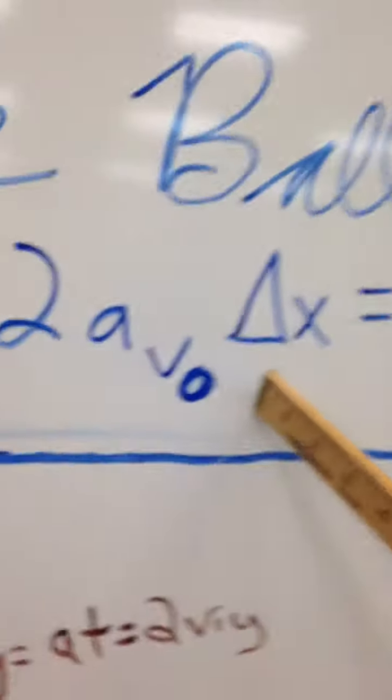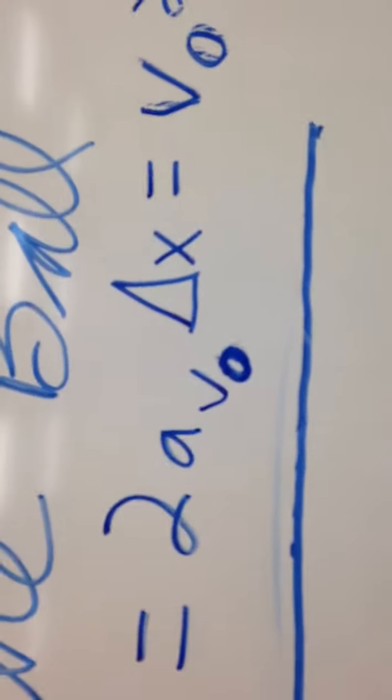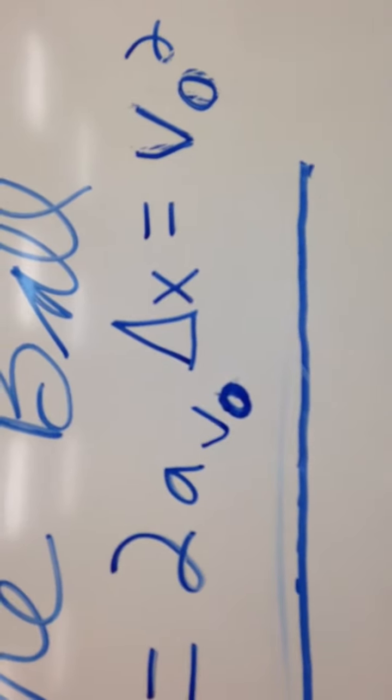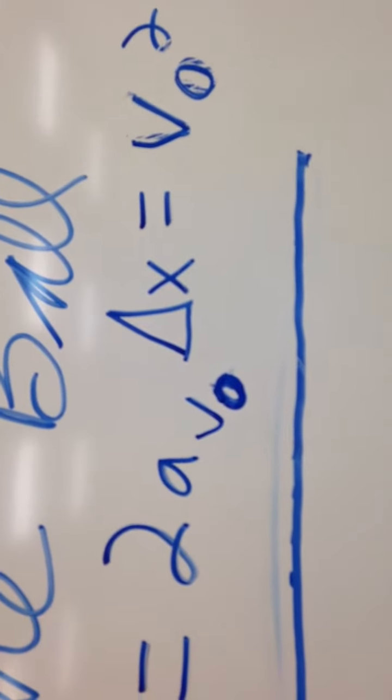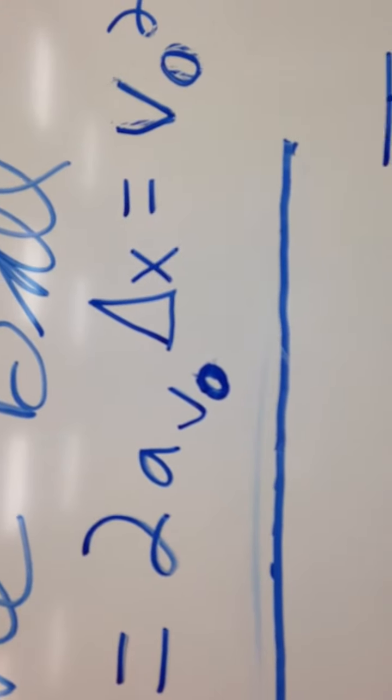We try to figure out the acceleration by using this equation: acceleration due to distance and initial and final velocity. Now, initial velocity, the ball started from a tee, which would be rest. So, we eliminated that portion from the equation.